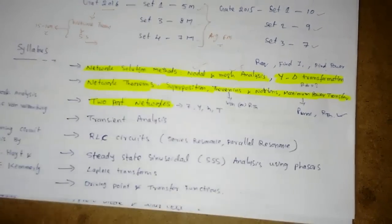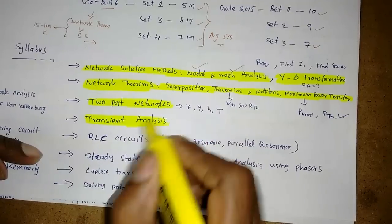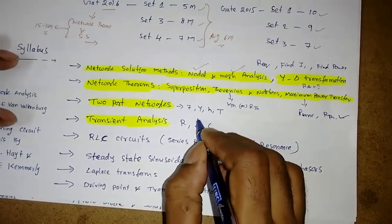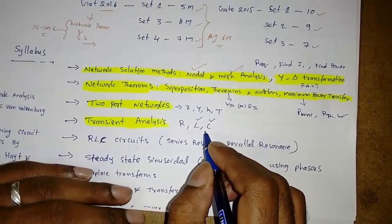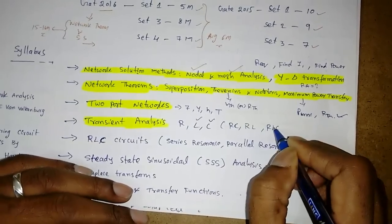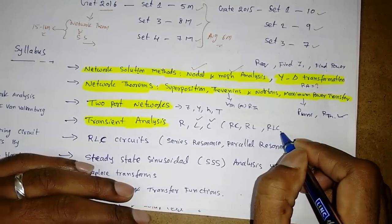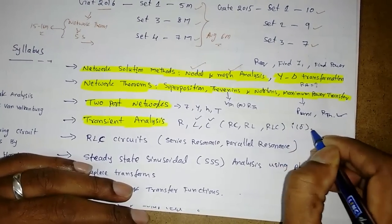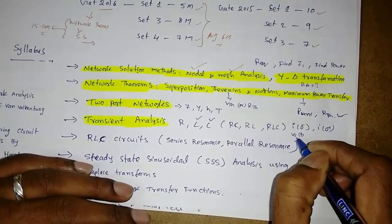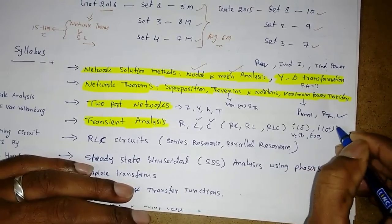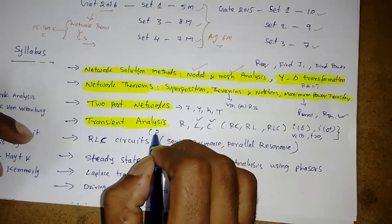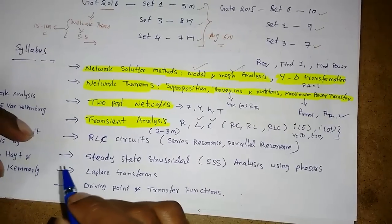Next topic is transient analysis. The L and C doesn't have sudden changes in the network. That may be RC network, RL network and RLC network, series RL, parallel RL, series RLC, parallel RLC. What is the I of 0 minus and I of 0 plus, something like the questions will come. Vc of t, find the capacitor voltage for t greater than zero. These type of questions will come. There is a confirmed question from transient analysis.